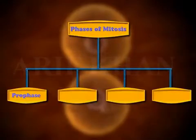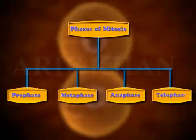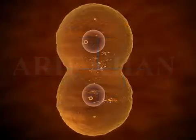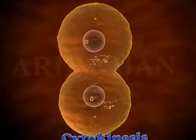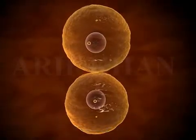It is divided into four key phases: prophase, metaphase, anaphase, and telophase. An additional phase called cytokinesis occurs after the complete nuclear division.